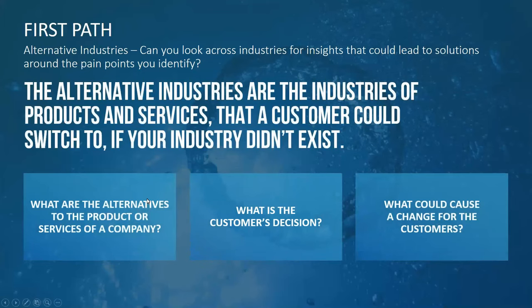The first path is to look across alternative industries. Can you look across industries unrelated to the one you're in for insights that could lead to solutions around pain points? Alternative industries are products and services that a customer could switch to if your industry didn't exist. In the bed-and-breakfast industry, you might look at Airbnb — but you could look even further for industries with similarities to the B&B industry.